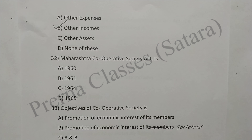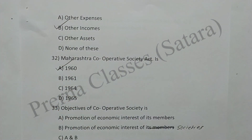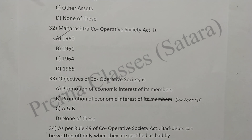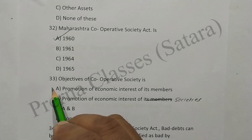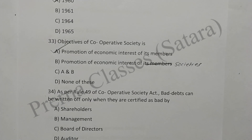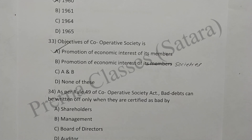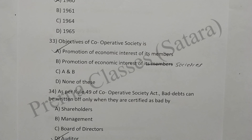Question 32: Maharashtra Cooperative Societies Act is from 1960. Option A is correct. Question 33: Objective of a cooperative society is promotion of economic interest of its members. Option A is correct. Question 34: As per rule 49 of cooperative societies, bad debts can be written off only when they are certified as bad by the auditor. Option D is correct.